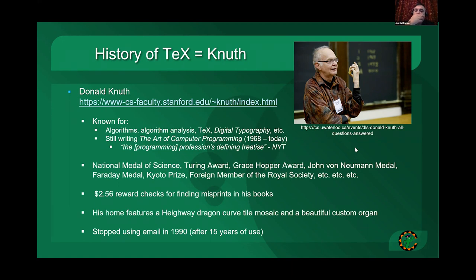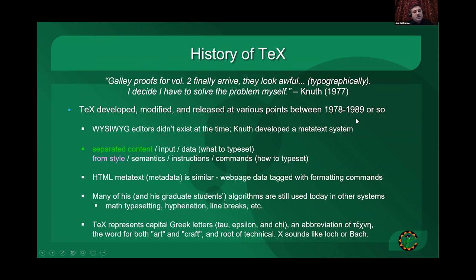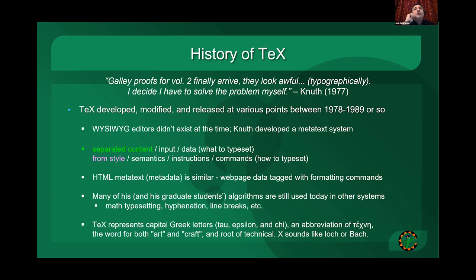I personally haven't read the series, though I've seen bits from it over the years. Speaking of that, after his second volume was coming out, there's a famous quote from 1977: 'The galley proofs have finally arrived and they look awful typographically. I've decided to solve the problem myself.' What was happening is he was a fan of the old hot-press printing style, and around that time they had switched to a photo printing setup. Because of that, they weren't able to get all of the symbols exactly the way he wanted, where he wanted them — and being someone pedantic and OCD about computer science and math, he took on this problem.